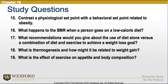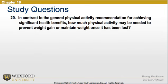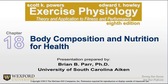Question 14: What does nutrient balance mean and how is the ratio of RQ to FQ used to determine nutrient balance? Question 15: Contrast the physiological set point with the behavioral set point related to obesity. Question 16: What happens to the BMR when a person goes on a low-calorie diet? Question 17: What recommendations would you give about diet alone versus a combination of diet and exercise to achieve a weight loss goal? Question 18: What is thermogenesis and how might it be related to weight gain? Question 19: What is the effect of exercise on appetite and body composition? Question 20: How much physical activity may be needed to prevent weight gain or maintain weight once it has been lost? This concludes Chapter 18 of Body Composition and Nutrition for Health. Please reference this lecture and your textbook for more information, or feel free to email at any time.